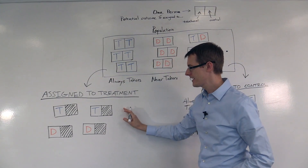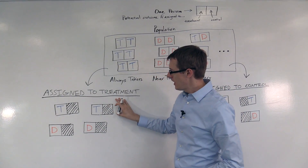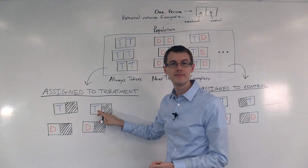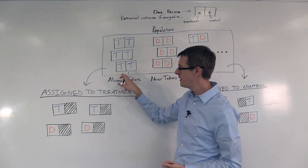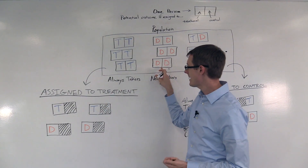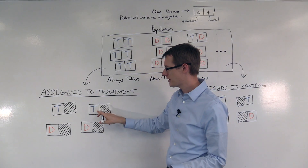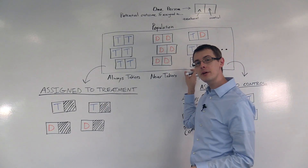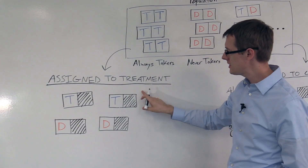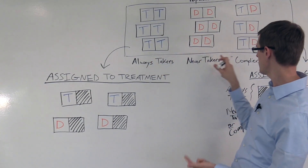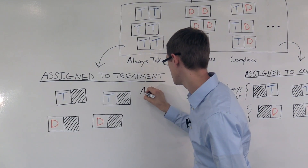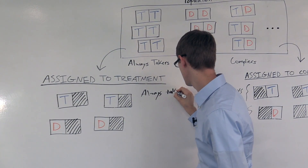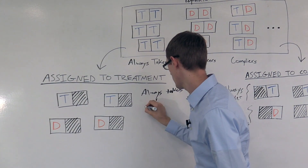Let's look at the treatment group — the assigned-to-treatment group. This person was assigned to receive treatment, and they did actually get treated. So they could be an always-taker; they can't be a never-taker, because a never-taker wouldn't have gotten treated. They could also be a complier. So these two people could be either always-takers or compliers.